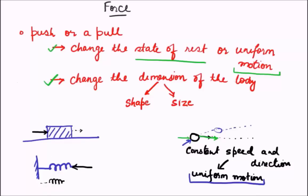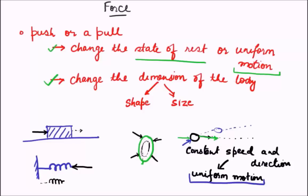Let us see another example. Imagine you have a balloon and you apply force on it from different directions. What this will do is ultimately compress the balloon into a smaller size. Also, it can change the shape too, depending on how the force is applied. So this is another example where the dimension of the body is changed due to the applied force.